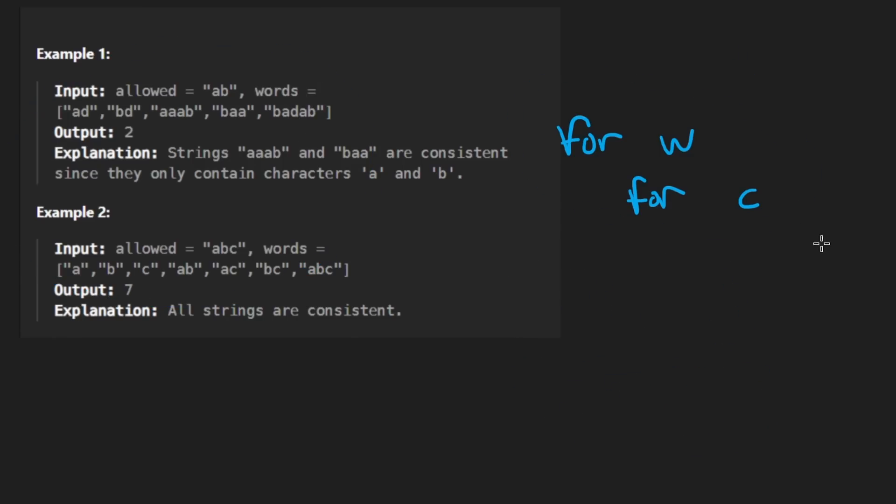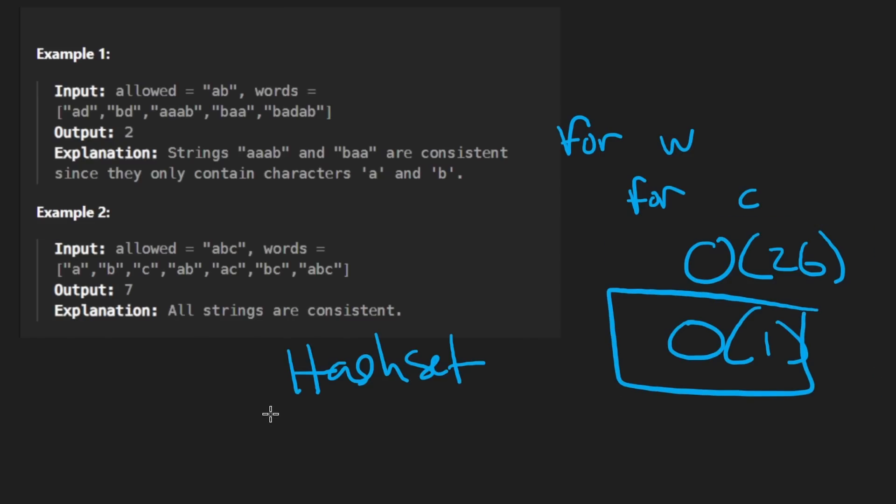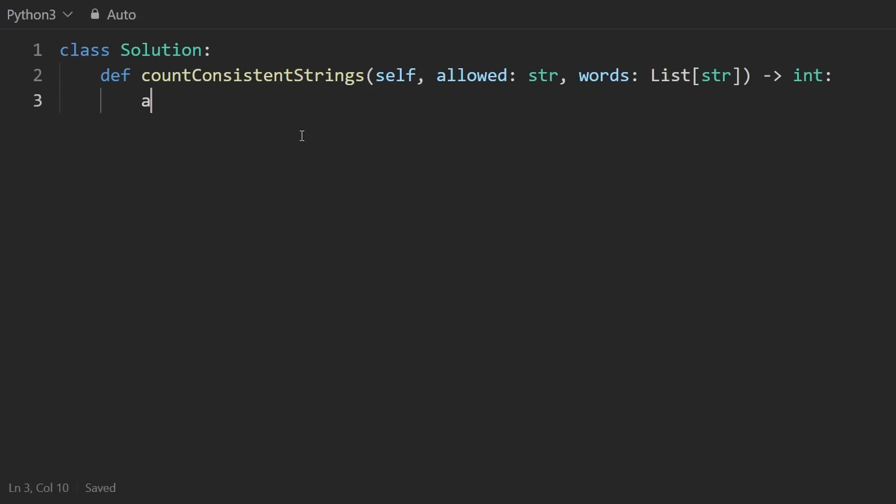So the hash set solution is basically, instead of looking up within the string, we can convert this into a hash set and then do the lookup there. So we're replacing an operation that usually would cost this and replacing it with this. Now in terms of big O, obviously these are equivalent, but this is slightly more efficient, I guess. If you don't know what a hash set is, by the way, you could probably check out neatcode.io. There's a ton of resources on there. So as I mentioned, we're going to take that allowed string and convert it into a hash set just like that.